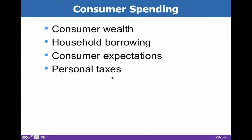Consumer spending is determined by four things: consumer wealth, the level of borrowing, our expectations, and taxes. These things can all go up or down, and that will change where we wind up moving our aggregate demand curve.